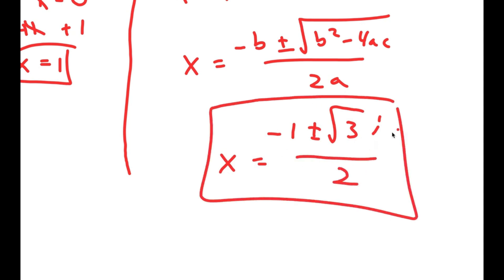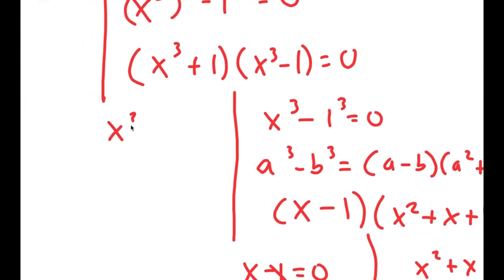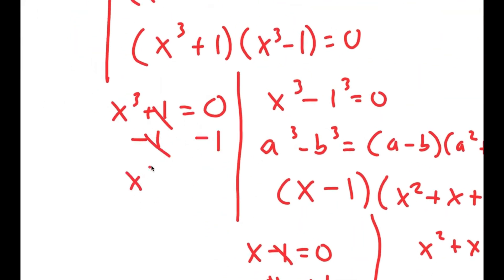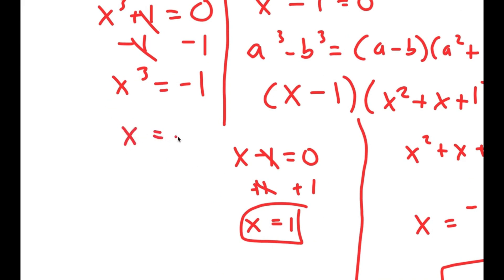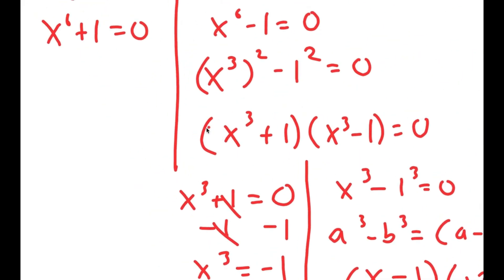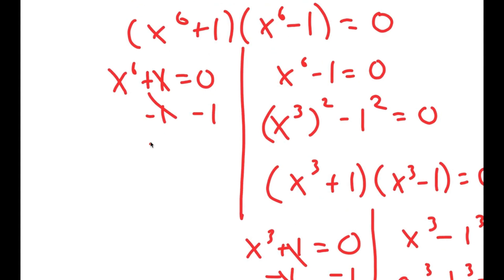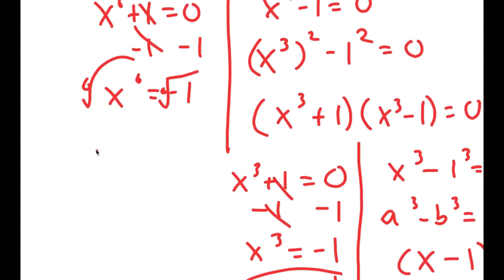So those are two more solutions, and we aren't done yet because we also have to solve the remaining equations. For x to the power of 3 plus 1 equals 0, I subtract 1 on both sides to get x to the power of 3 equals negative 1, meaning x is equal to negative 1. So that is another solution. Now for x to the power of 6 plus 1 equals 0, I subtract 1 on both sides so x to the power of 6 equals negative 1, and taking the 6th root gives x equals the 6th root of negative 1, which is negative 1 to the power of 1 over 6.